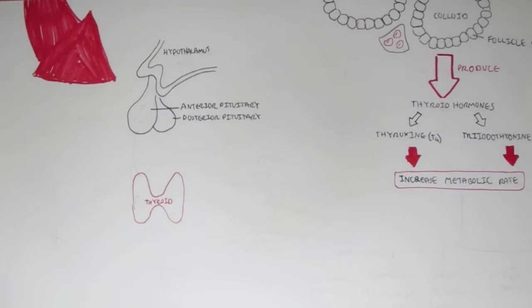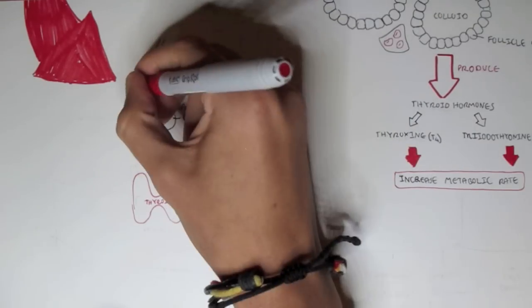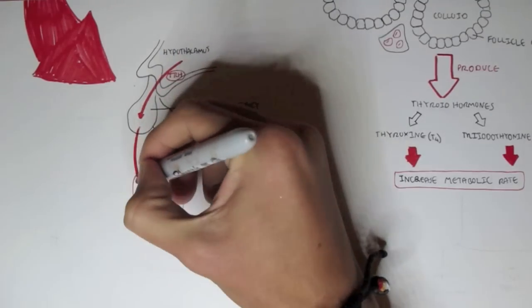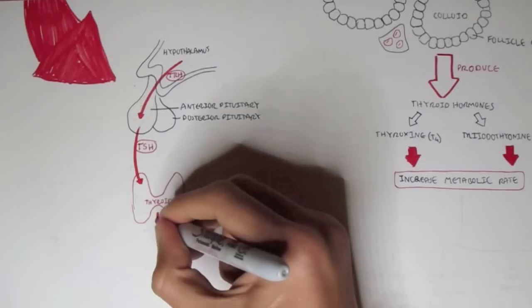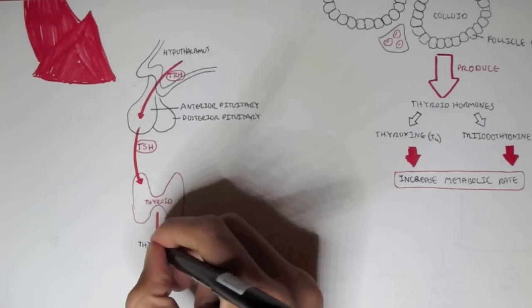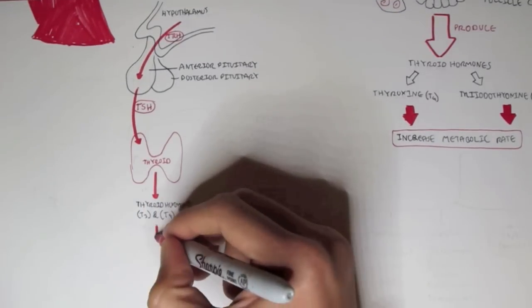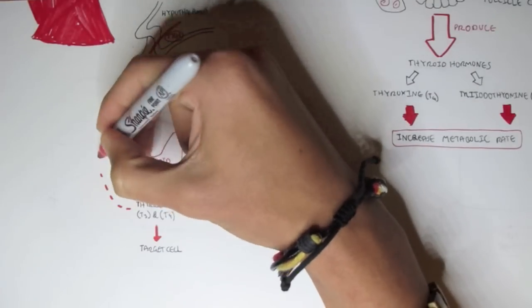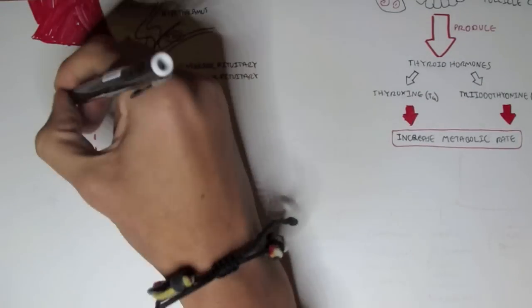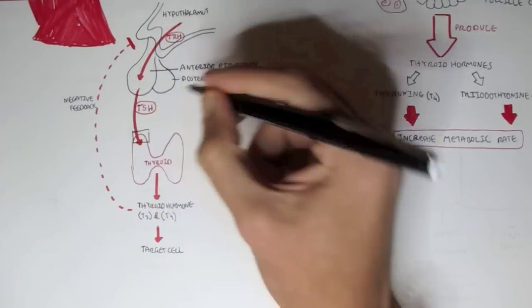The hypothalamus secretes thyroid-releasing hormone (TRH), which causes the anterior pituitary gland to secrete thyroid-stimulating hormone (TSH). TSH then causes the thyroid gland to produce the thyroid hormones T3 and T4, which target specific types of cells. There is a negative feedback here: too much production of T3 and T4 will inhibit the hypothalamus from secreting more TRH.